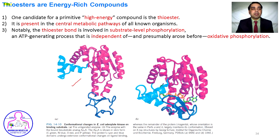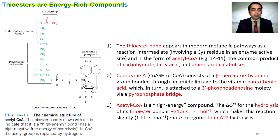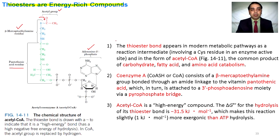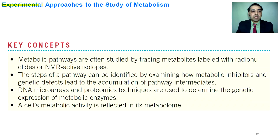Thio esters are energy-rich compounds. They are among the primitive high-energy compounds present in the central metabolic system of all known organisms, producing ATP independent of oxidative phosphorylation. The structural formula of acetyl-CoA shows different components: adenosine 3'-phosphate, a pantothenic acid residue, a beta-mercaptoethylamine residue, and an acetyl group. The thioester group is present here, and during its hydrolysis energy is released and ATP is synthesized.